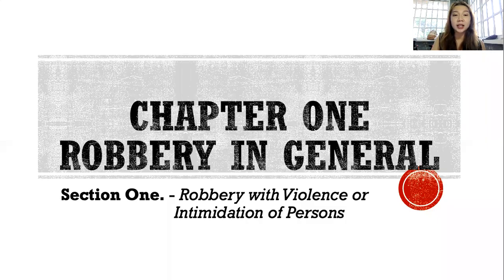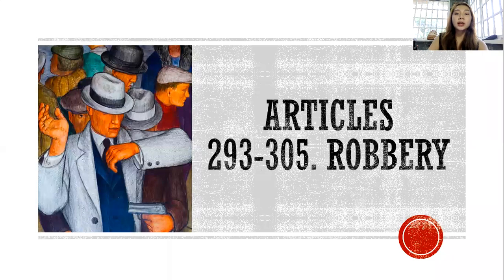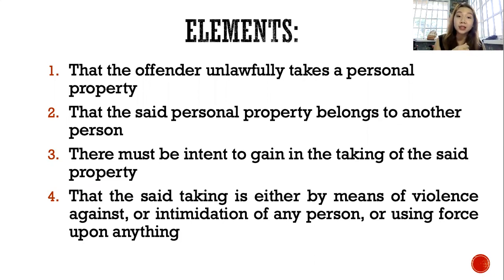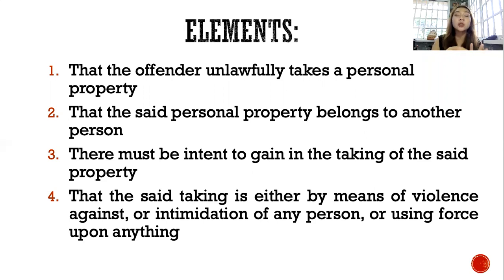Chapter 1 is Robbery in General, and Section 1 is Robbery with Violence or Intimidation of Persons. Articles 293 to 305 discuss robbery. Robbery is committed by any person who, with intent to gain, shall take any property belonging to another by means of violence against or intimidation of any person, or using force upon anything. The elements of robbery include: the offender unlawfully takes personal property; the property belongs to another person; there must be intent to gain; and the taking is either by means of violence or intimidation upon any person, or using force upon anything.